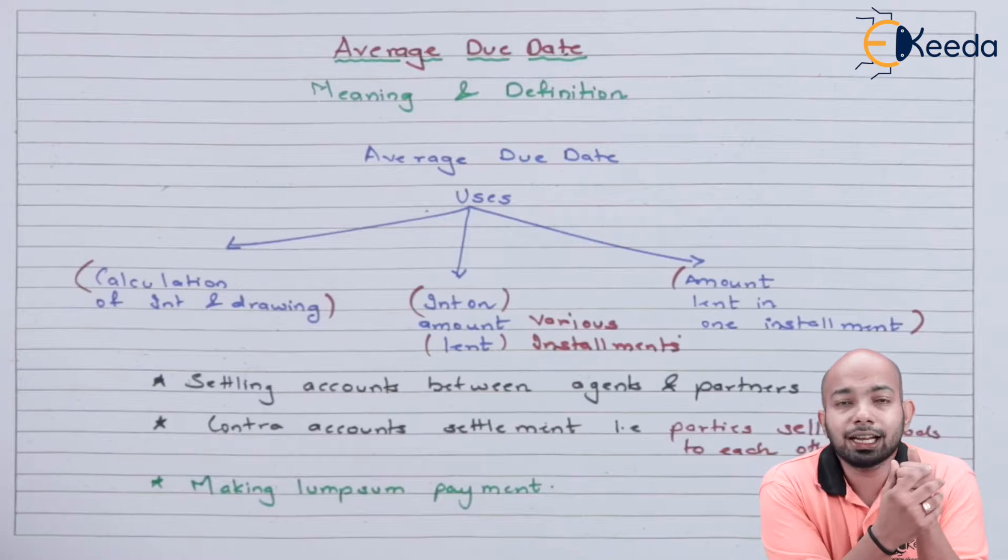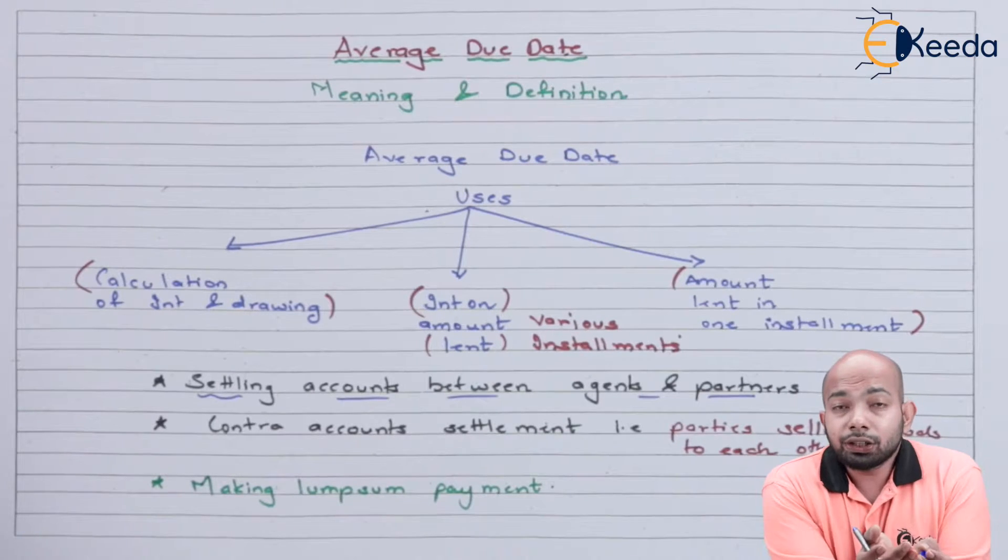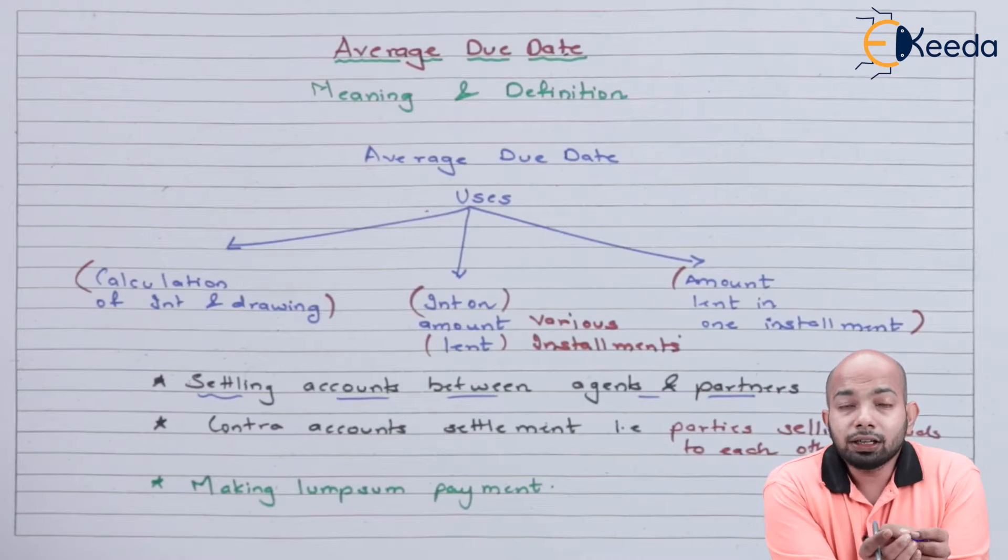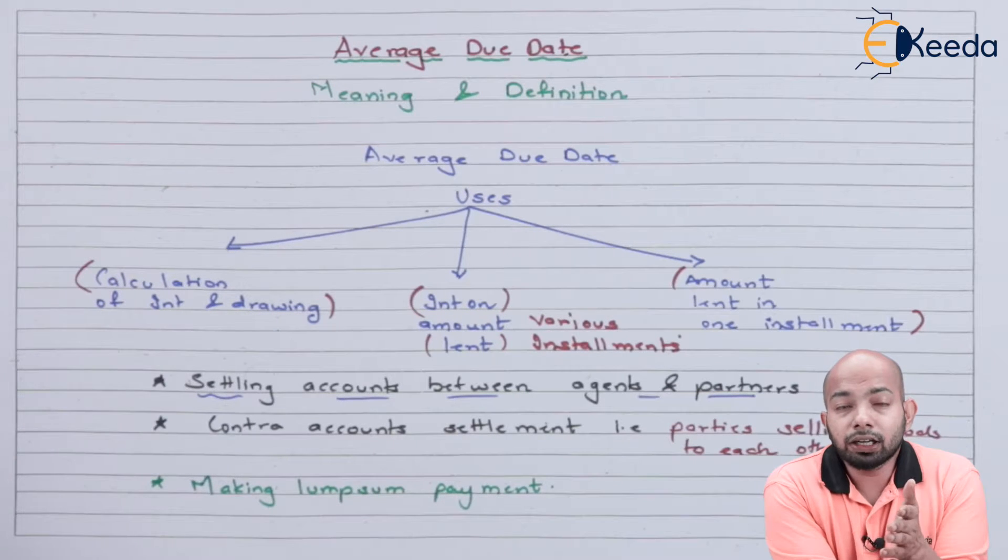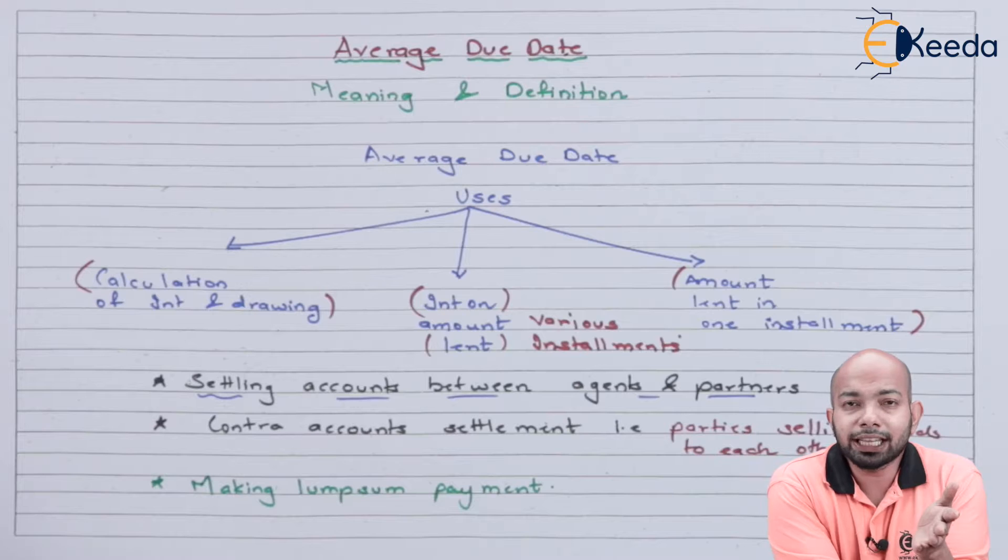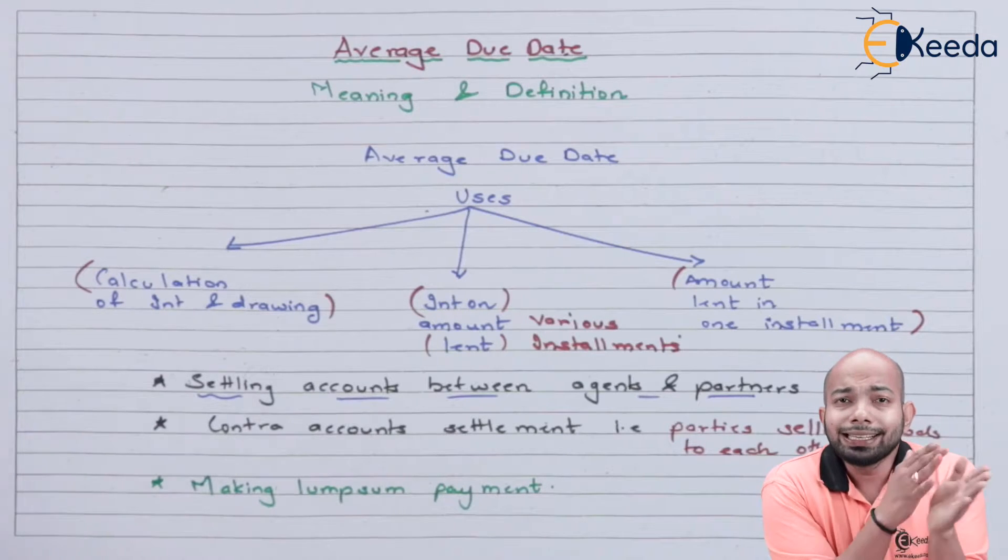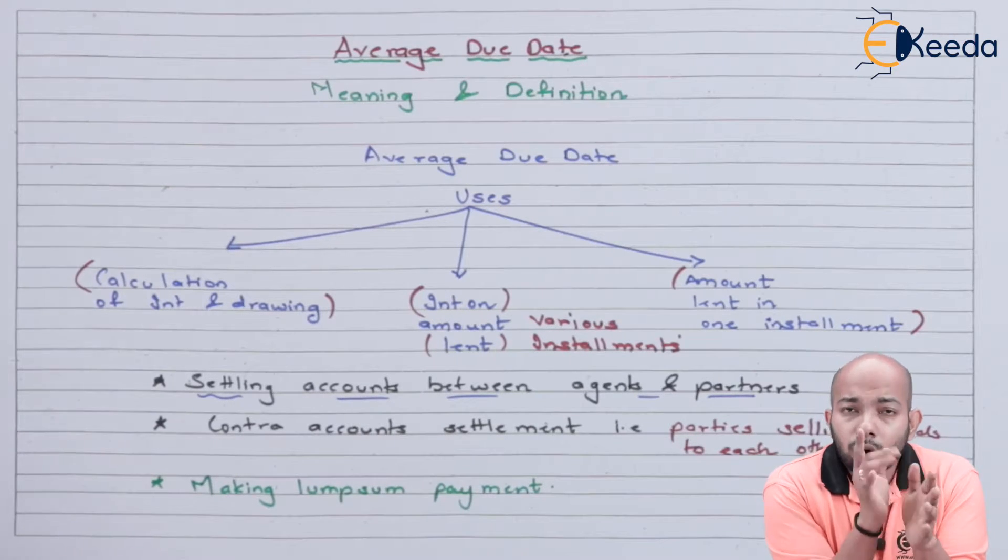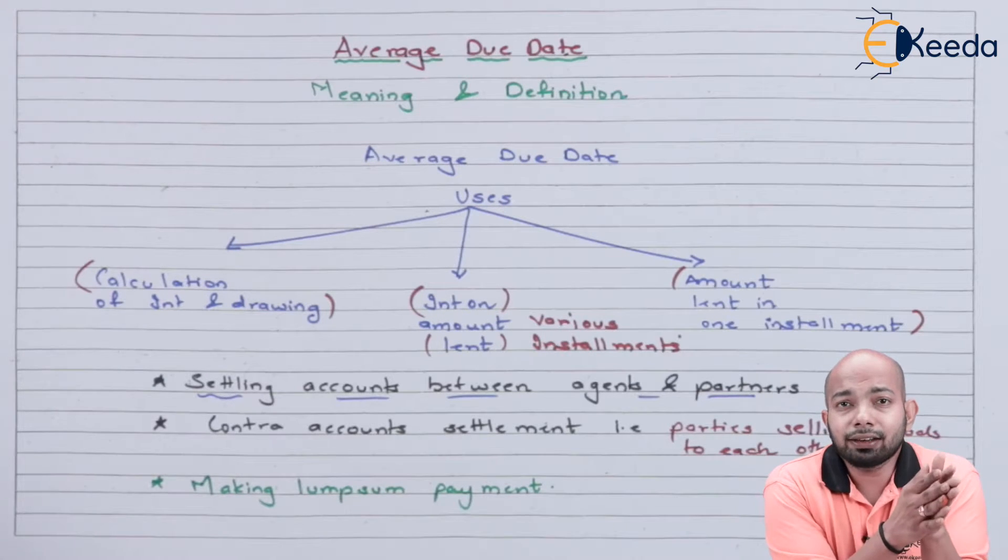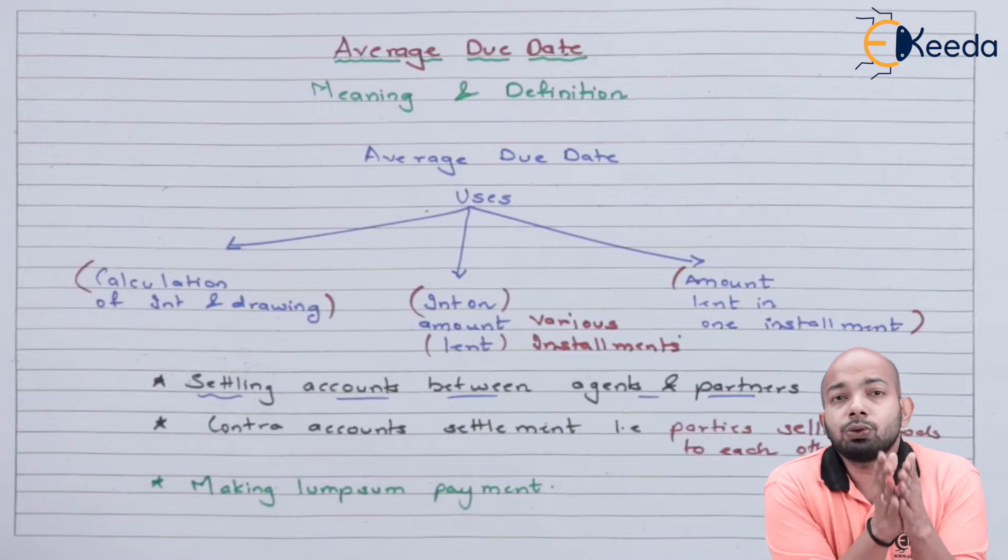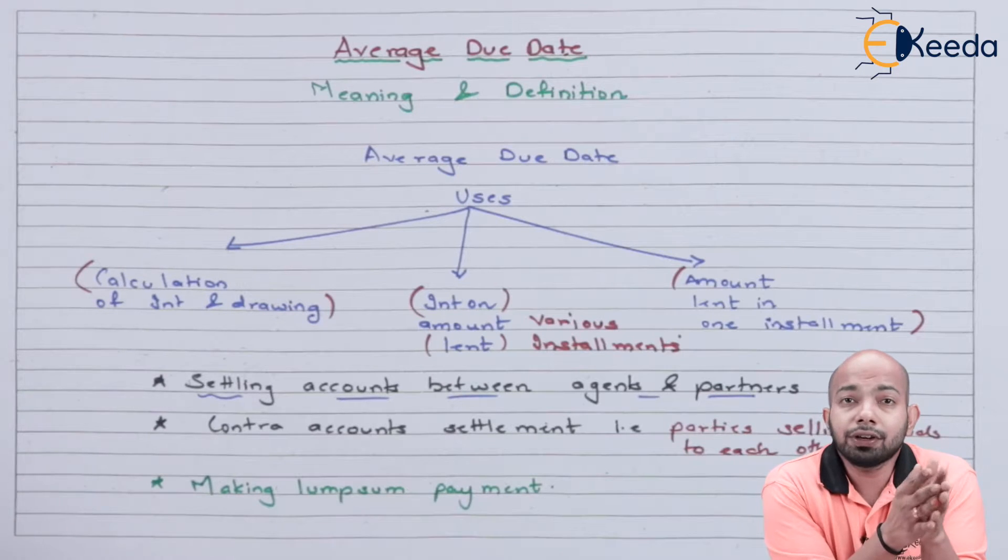Apart from that, there are certain more things that we'll be discussing. Average due date concept can also be used between agents and partners. So if there is an agent, there is a partner, if they have to settle their accounts between them, they can use average due date concept by settling up the whole amount due on one single day and the interest will be calculated on that day itself.